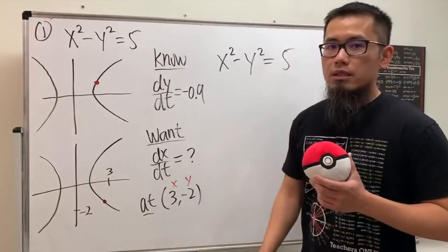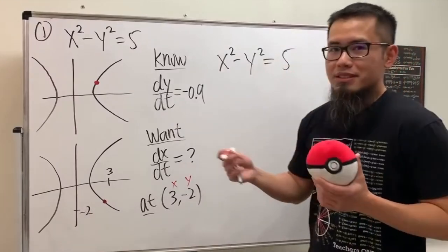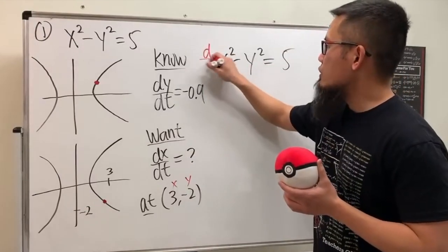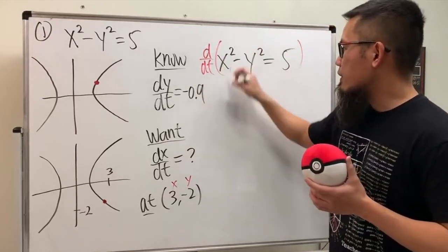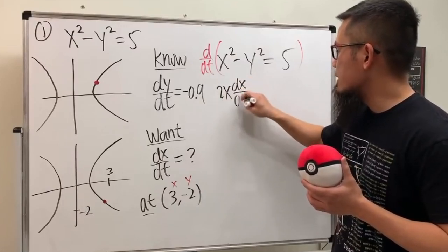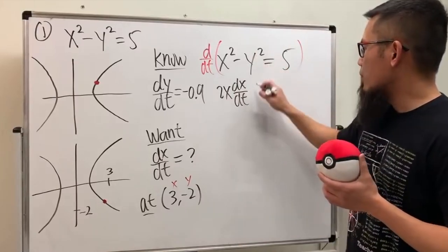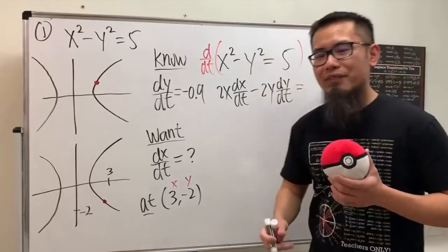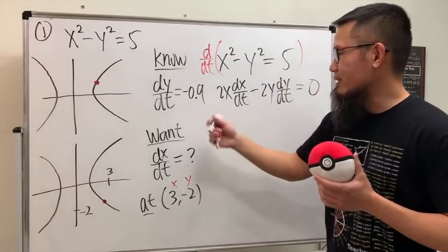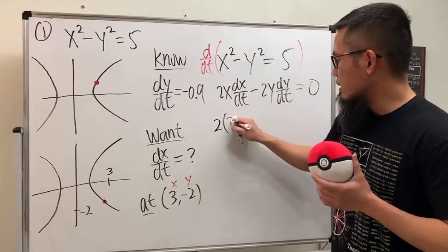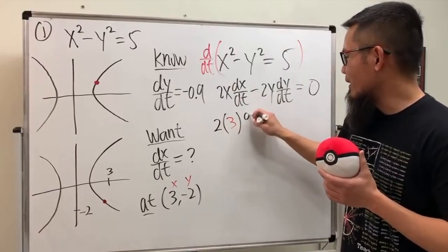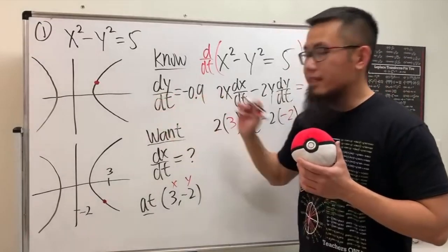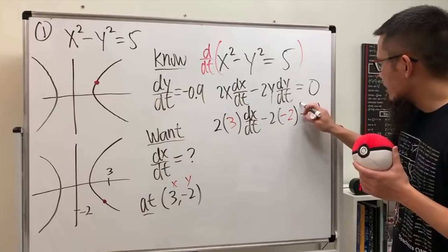This is an easy question because we already have the equation. We differentiate x² - y² = 5 with respect to t. Since x and y are changing, we get 2x(dx/dt) minus 2y(dy/dt) = 0. Now plug in the values: 2(3)(dx/dt) minus 2(-2)(dy/dt). The dy/dt is -0.9, so we substitute that in.